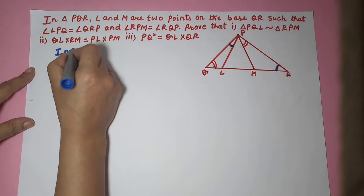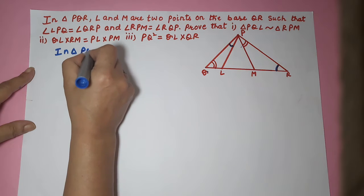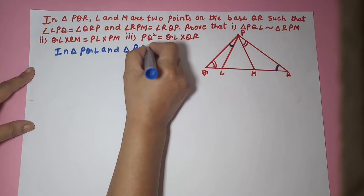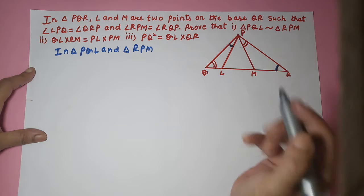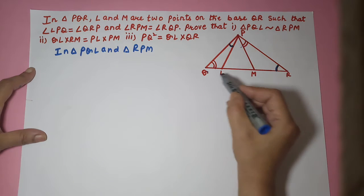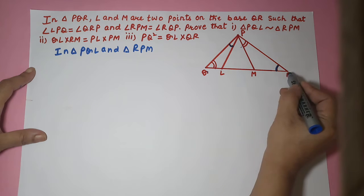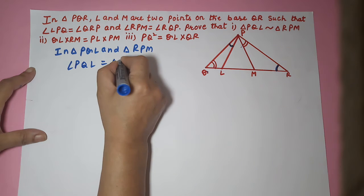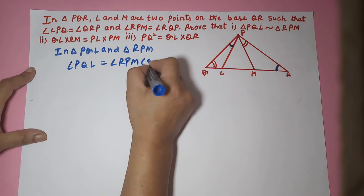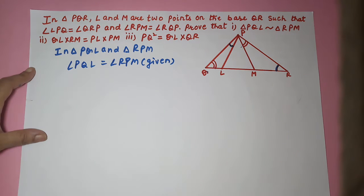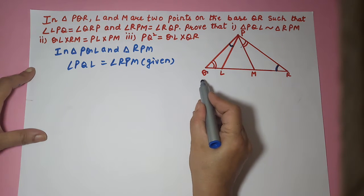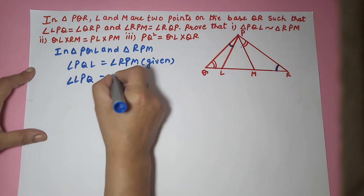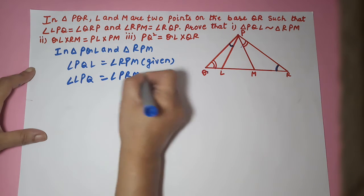So let's take these two triangles. In triangle PQL and triangle RPM, let's see which two angles are the same. Angle PQL is equal to angle RPM — that is given. Another angle: LPQ is equal to angle PRM — that is also given.